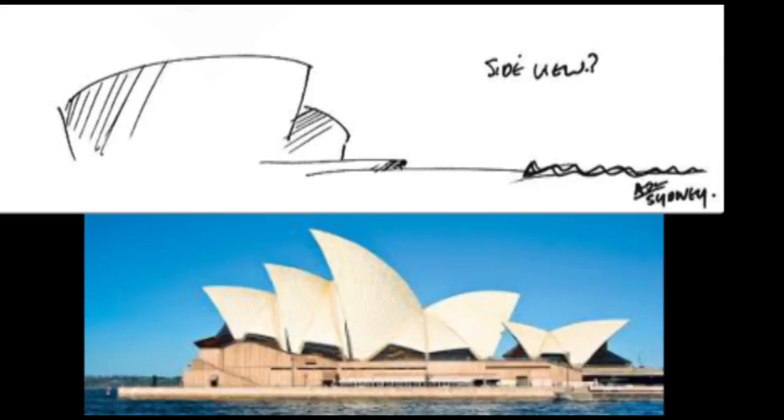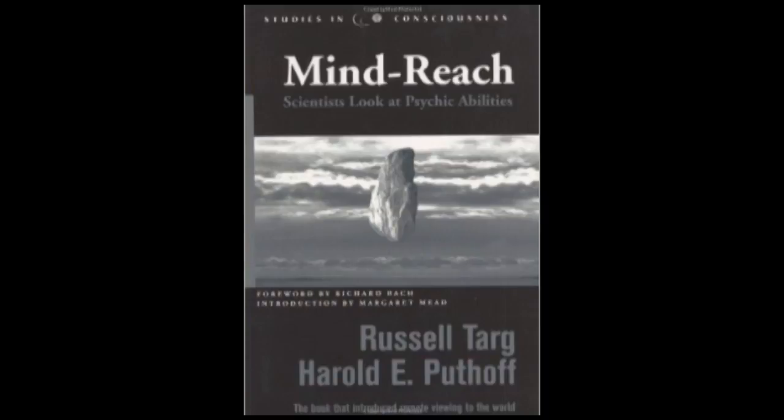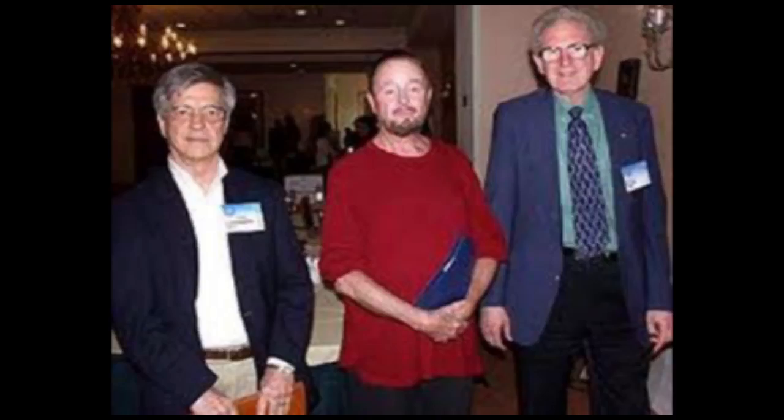In the book that introduced remote viewing to the world, Mind Reach: Scientists Look at Psychic Abilities by Targ and Puthoff, the physicists involved in developing the remote viewing technology at SRI recognized that, in looking over the output produced by our research subjects, the elements of form, such as the drawing and the general descriptions of shape, color, and material, tended to be correct more often than the analytical elements of name, function, and size.